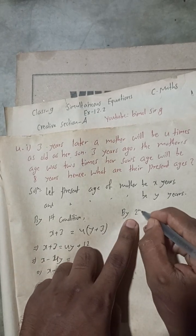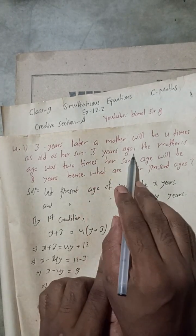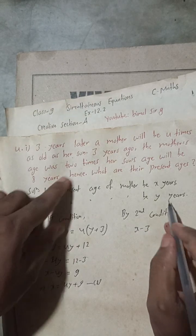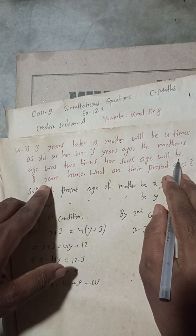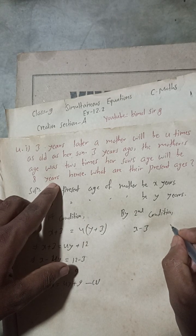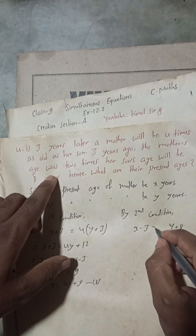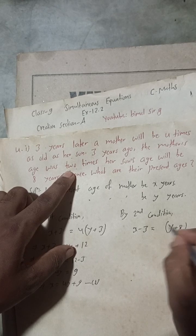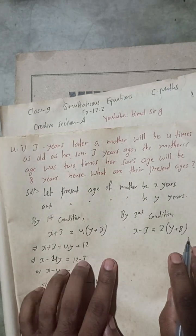By second condition: 3 years ago, the mother's age was x − 3. Her son's age 8 years hence will be y + 8. The question states that 3 years ago the mother's age equals 2 times her son's age 8 years hence, so: x − 3 = 2(y + 8).